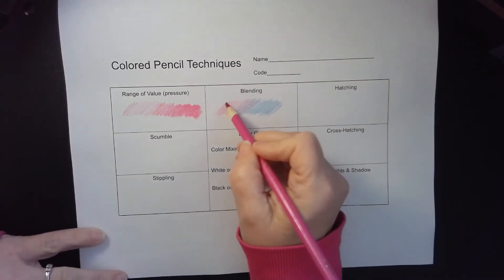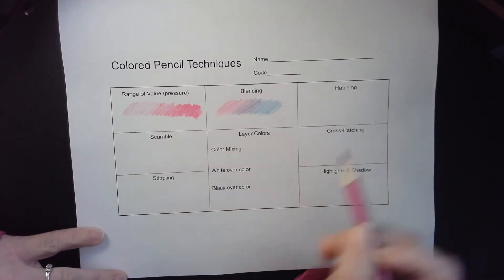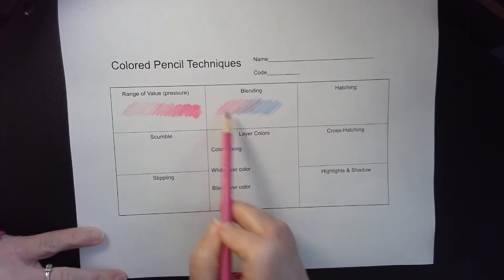If you need to go back over it again so you get a little bit more of the blend, that is fine. So I have a pink here into a purpley color with a blue blended on top, and then the blue over here.